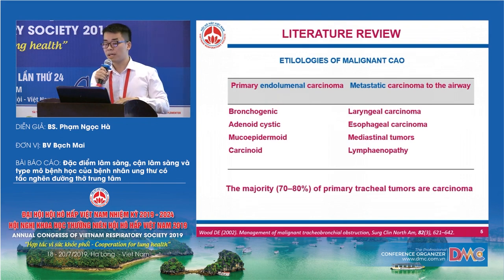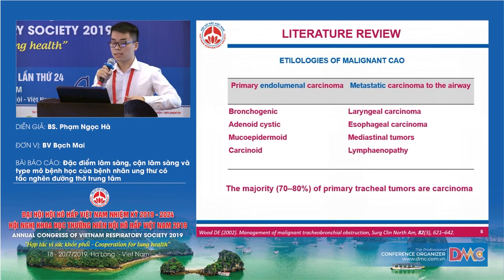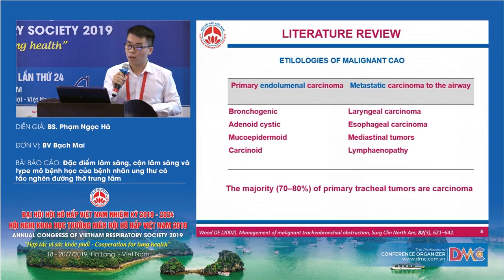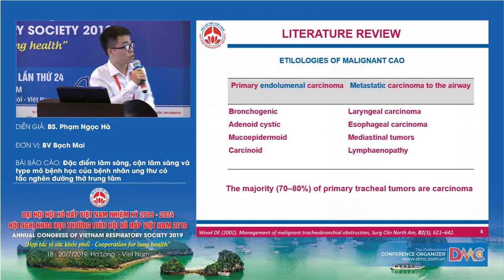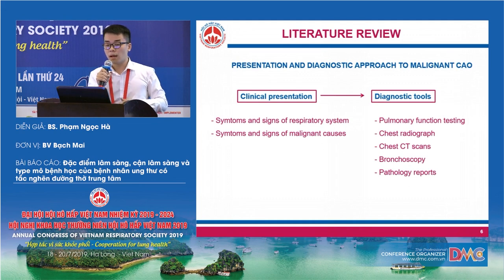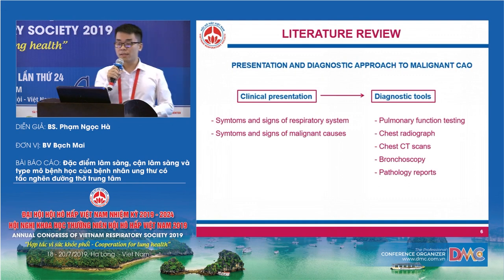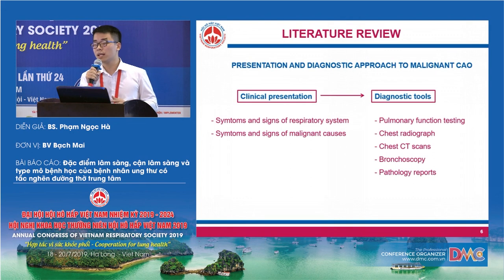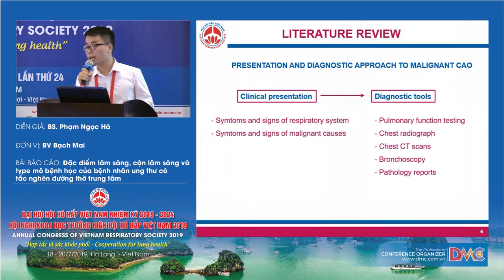In malignant CAO, the patient may have disease from primary endoluminal carcinoma or metastatic carcinoma to the airway. According to the literature, the majority of primary tracheal tumors are carcinoma. When a person has malignant CAO, he or she can present with some symptoms and signs of the respiratory system and malignant causes. From those symptoms and signs, the clinician can prescribe specific diagnostic tools, for example, pulmonary function testing, chest X-ray, chest CT scan, bronchoscopy, and pathology reports.